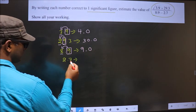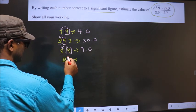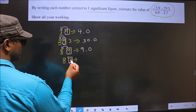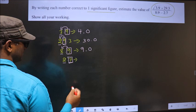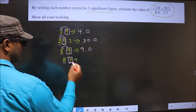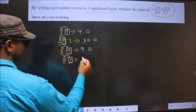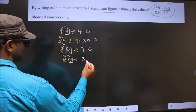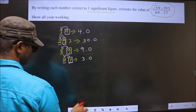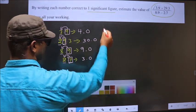Now, for this number, this is the first significant number. This is the second significant number, which is 7. 7 is greater than 5, so we should add 1 to this, making it 3. In the rest of the places, 0.